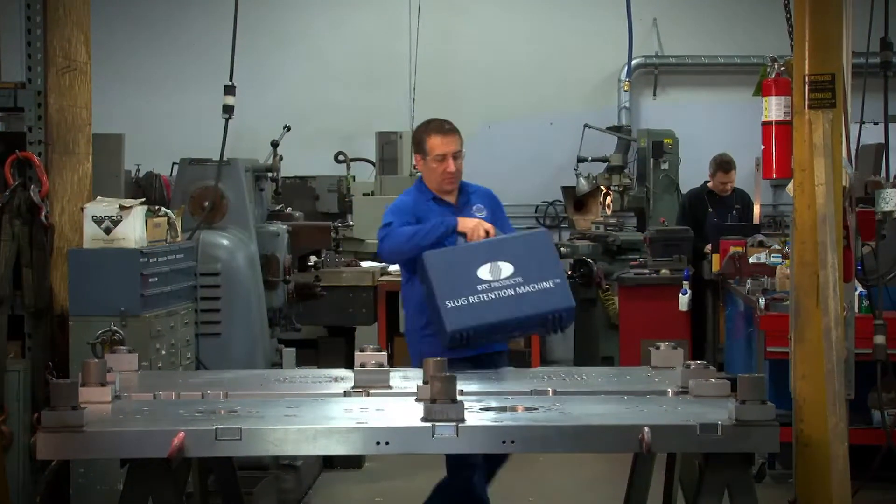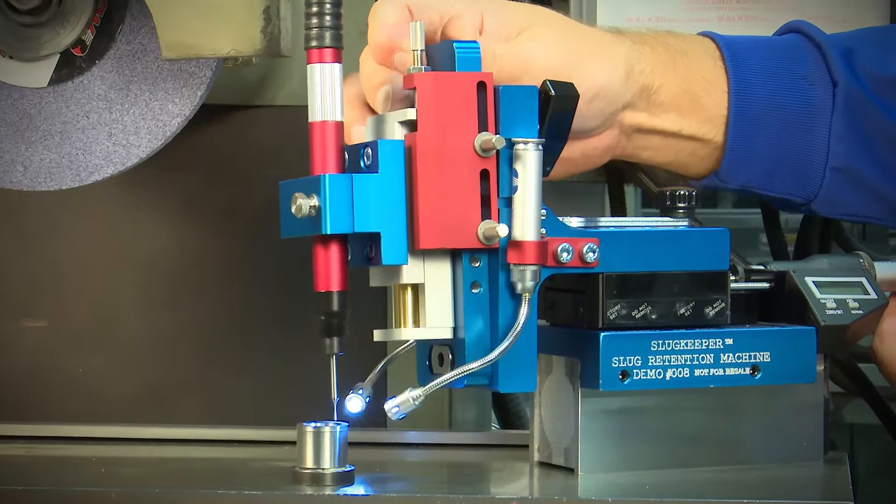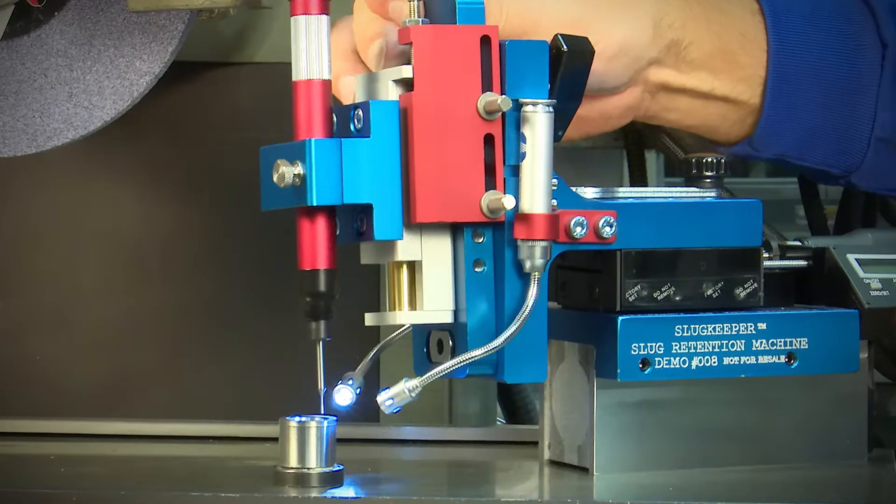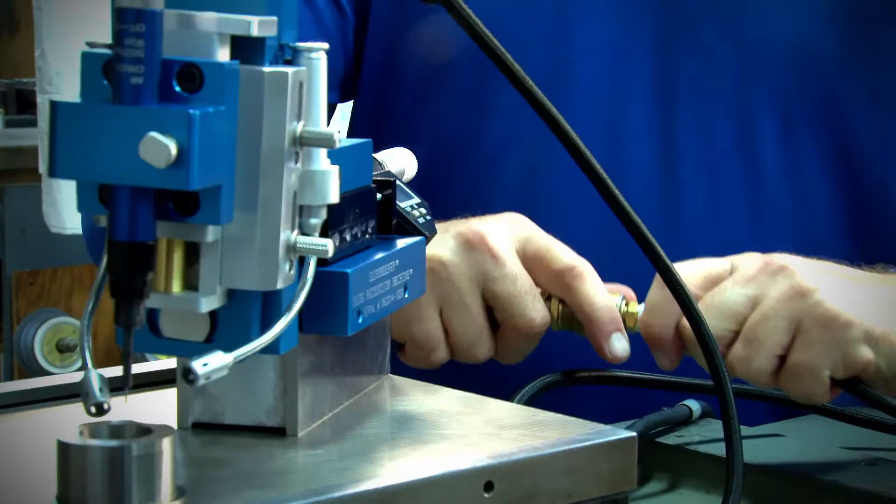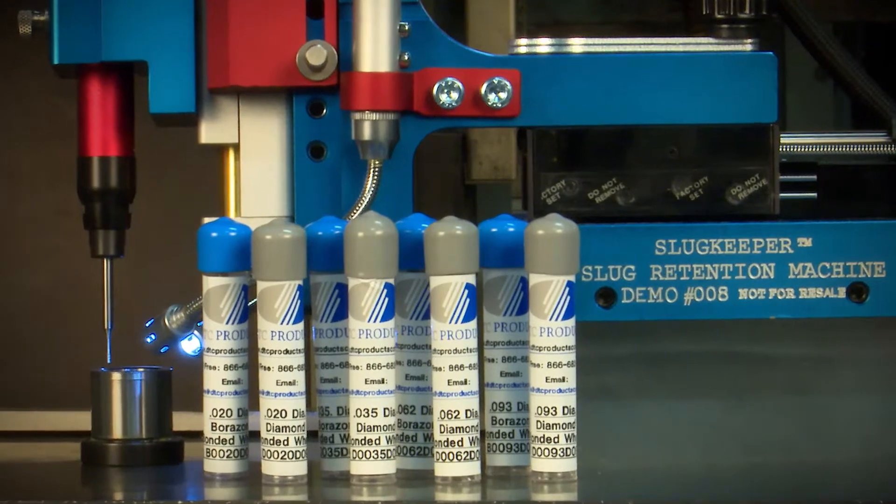Lightweight and portable, the slug keeper can be easily set up and operated by a single person. This unit measures less than 10 inches high, requires only a compressed air connection to operate, and comes with multiple diameter bits and supplementary tools.